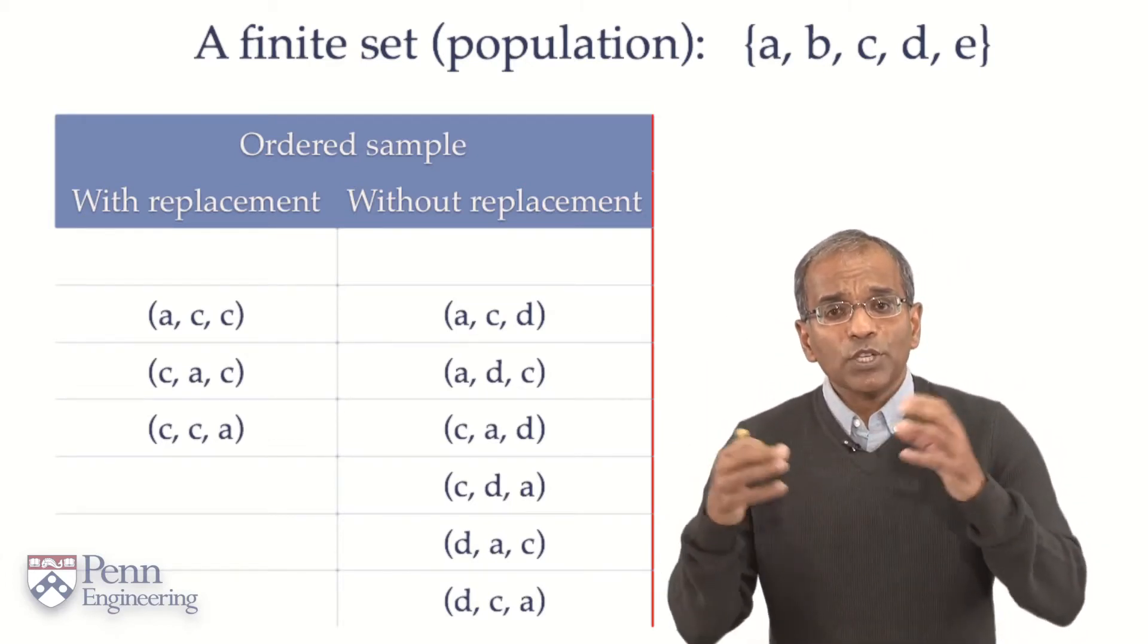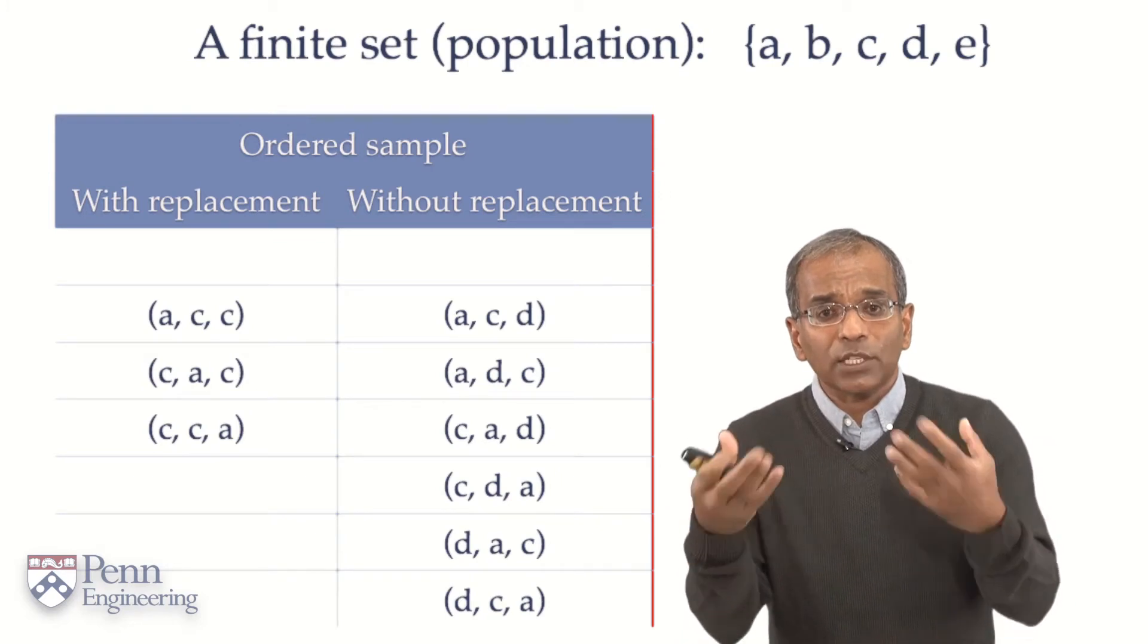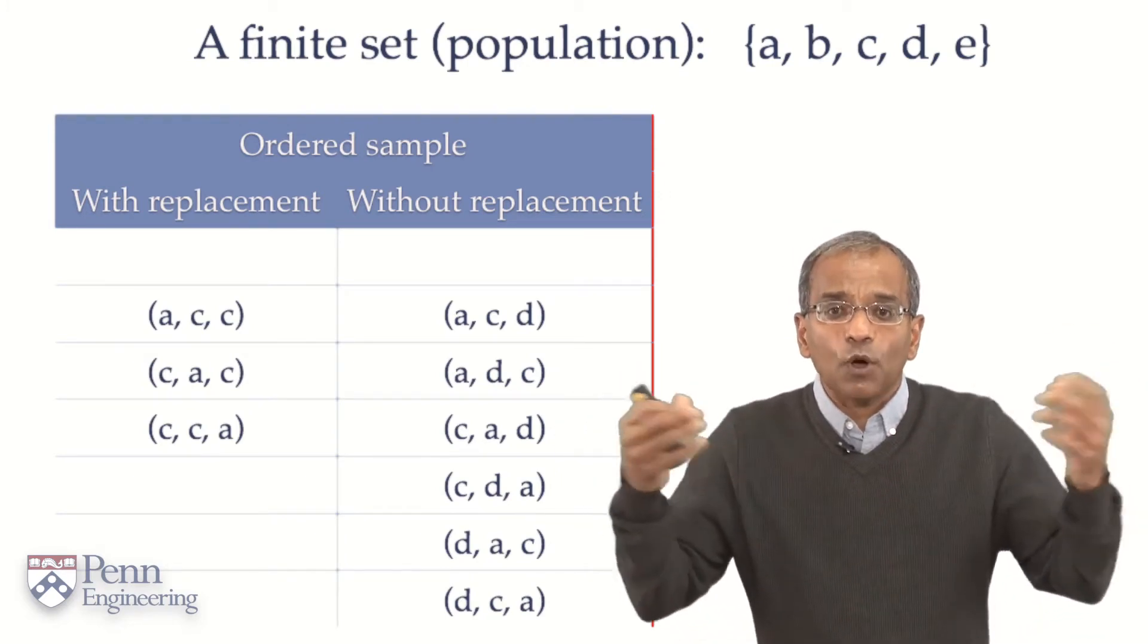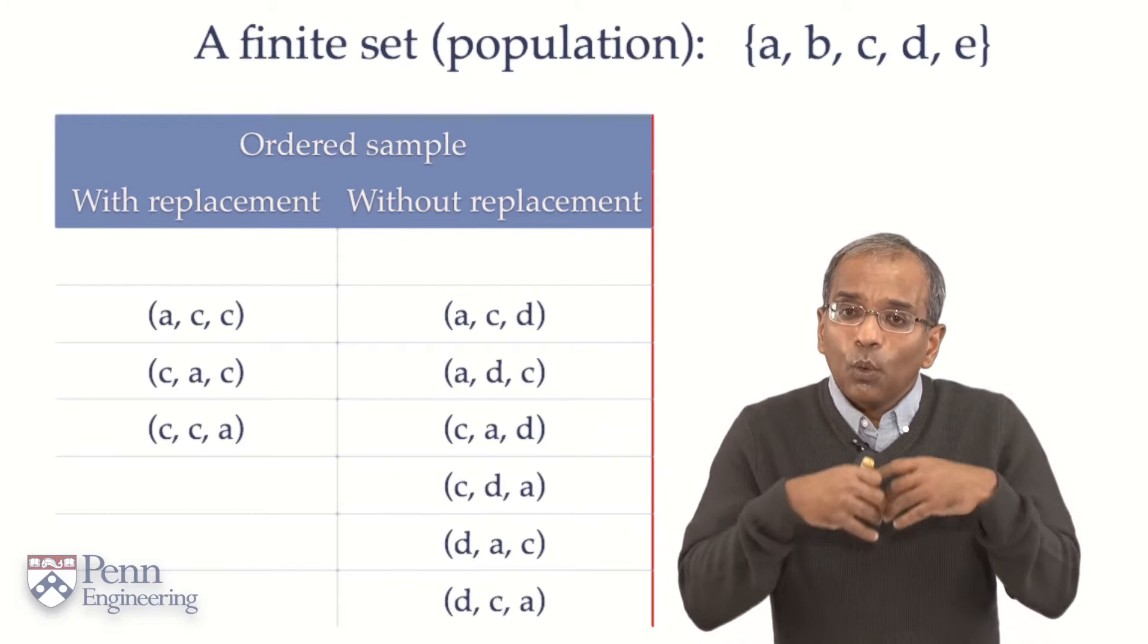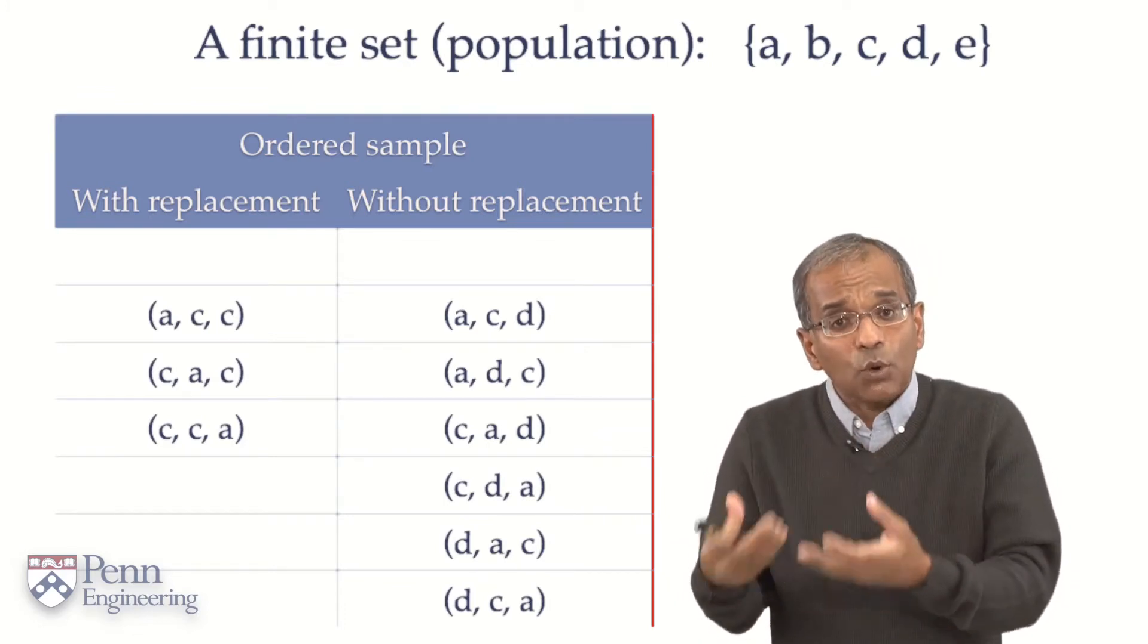So far, so good. I'll now describe for you how we can select three objects from a given set of five objects, with replacement and without replacement.